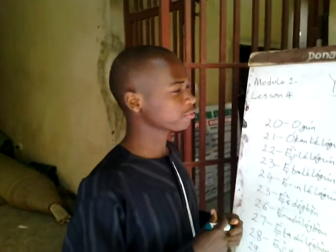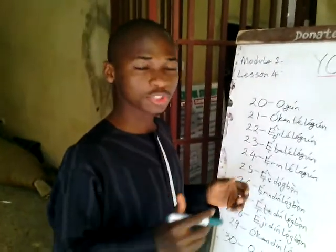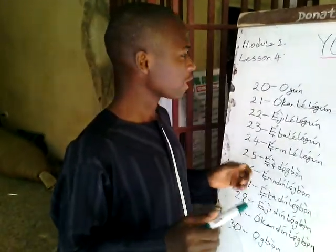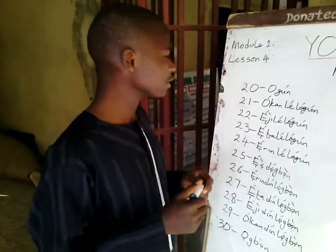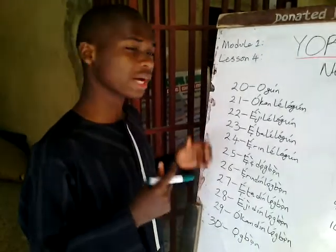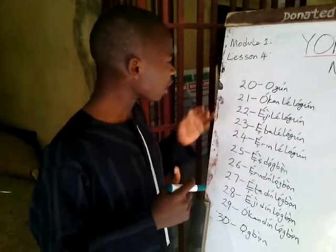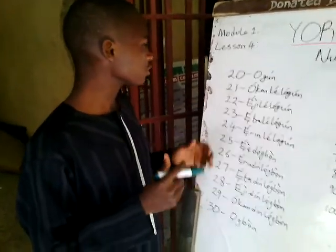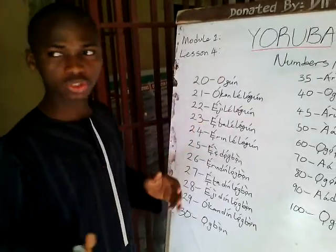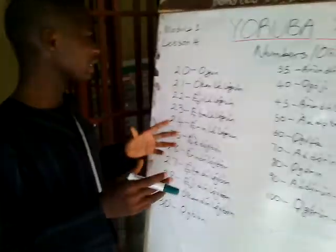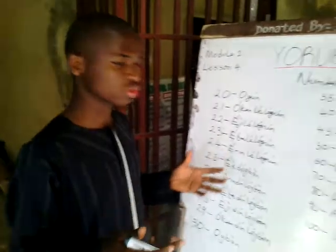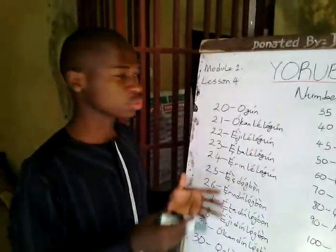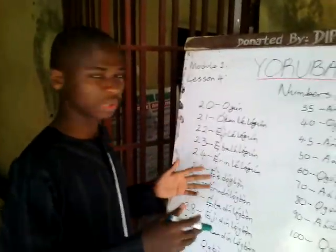Welcome to lesson 4 of the Yoruba language YouTube channel. My name is Ayla Edis Paddy and I am here to continue from the last class where we stopped. We shall be considering from number 20 to number 100 and the techniques and rules guiding those numbers between 20 and 100.